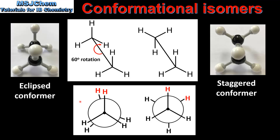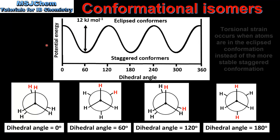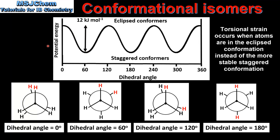In terms of energy, the eclipsed conformer has a higher potential energy than the staggered conformer. In this graph we can see the difference in potential energy between the two conformers. There is a difference of approximately 12 kJ per mole between the eclipsed conformers and the staggered conformers. This difference in energy is caused by torsional strain, which occurs as a result of the repulsion between the electrons in the carbon-to-hydrogen bonds.